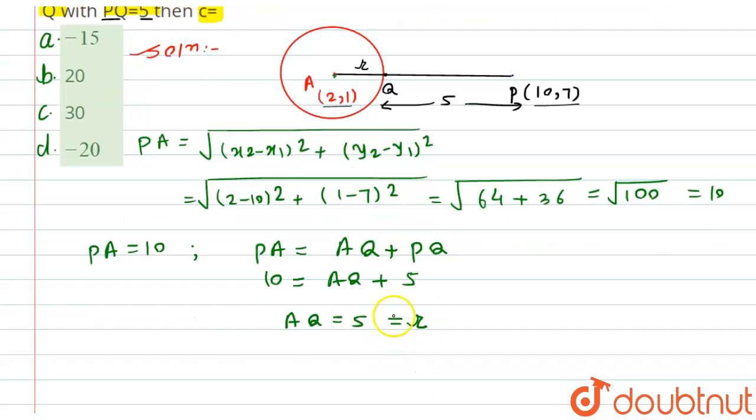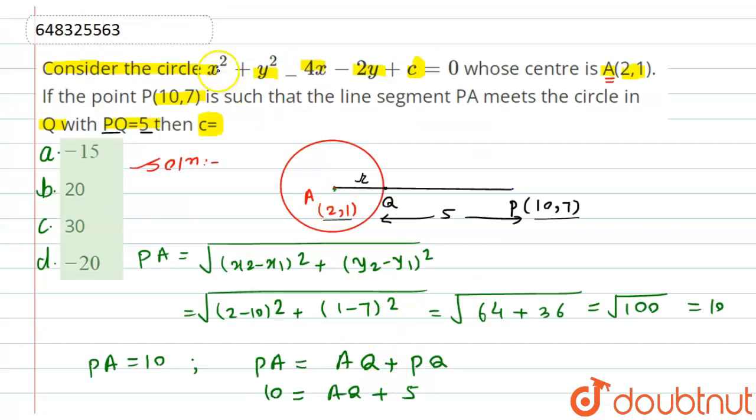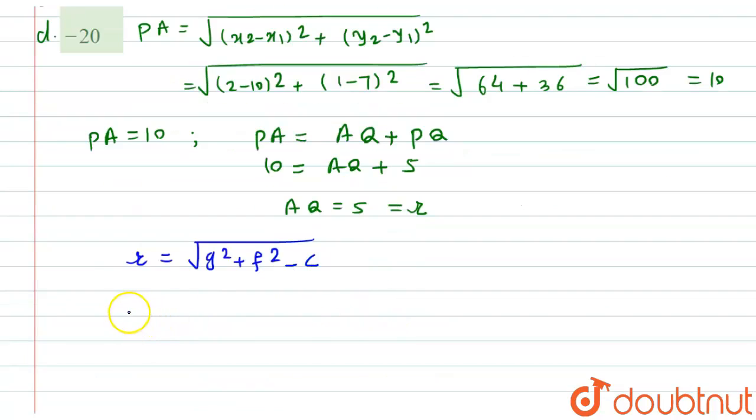Now to find the value of C, as we know the formula of radius, that is R equals the root of G squared plus F squared minus C. We will use the equation of the circle, that is X squared plus Y squared minus 4X minus 2Y plus C equals 0.